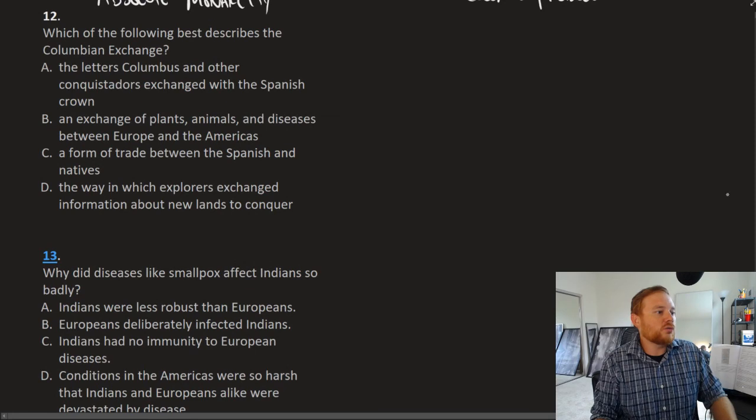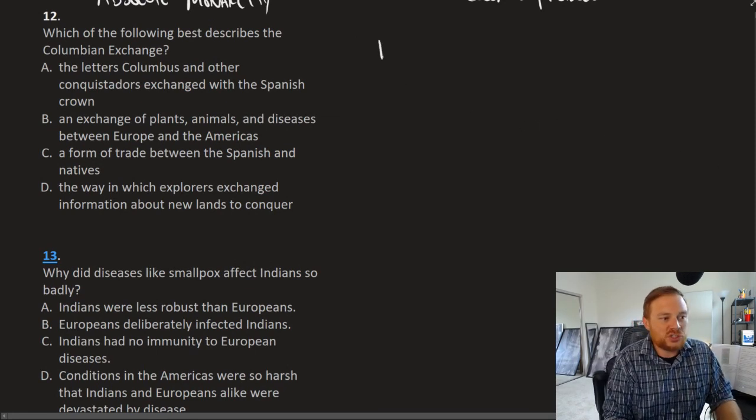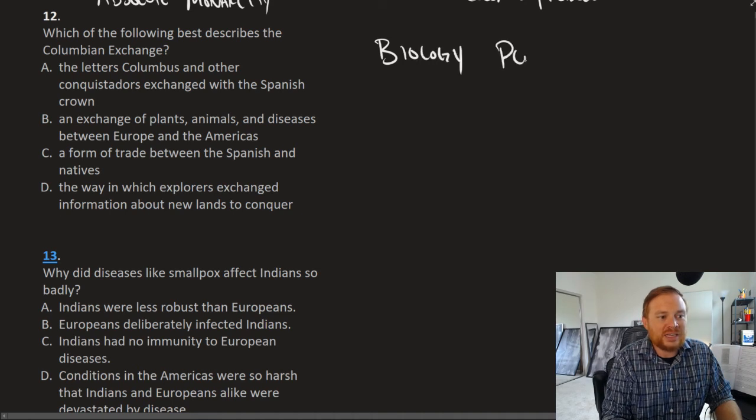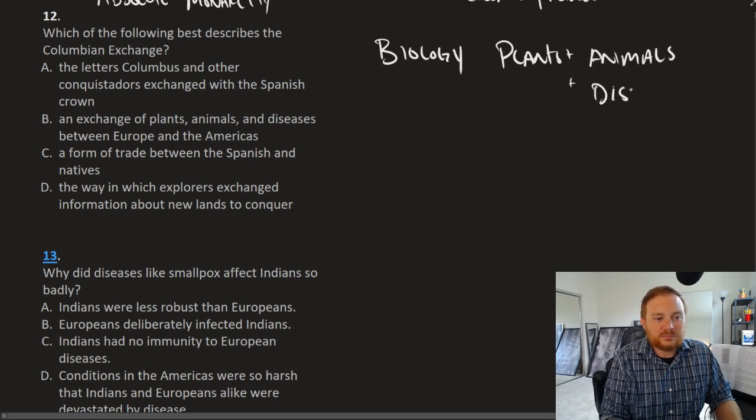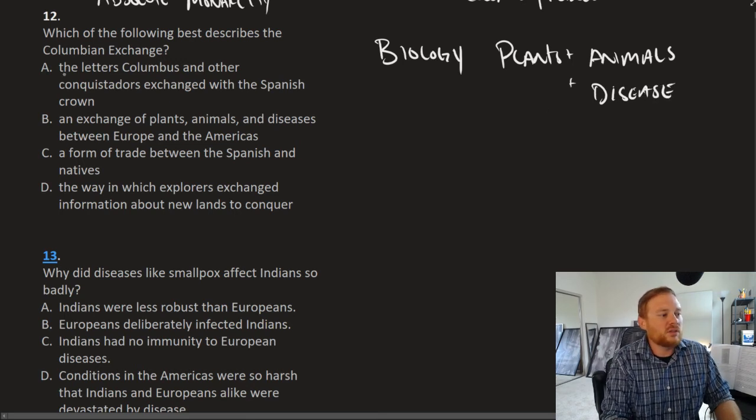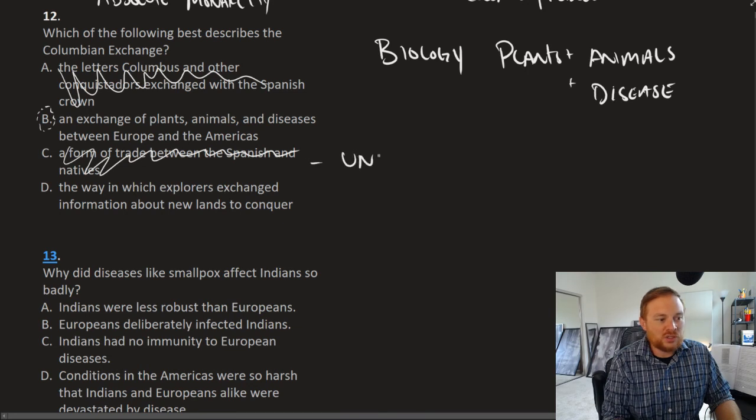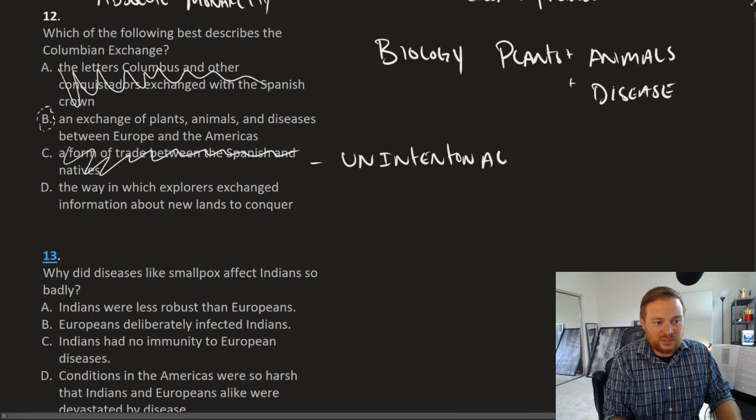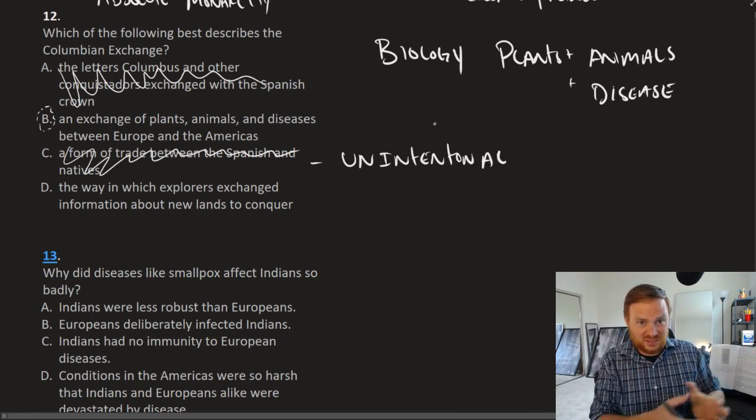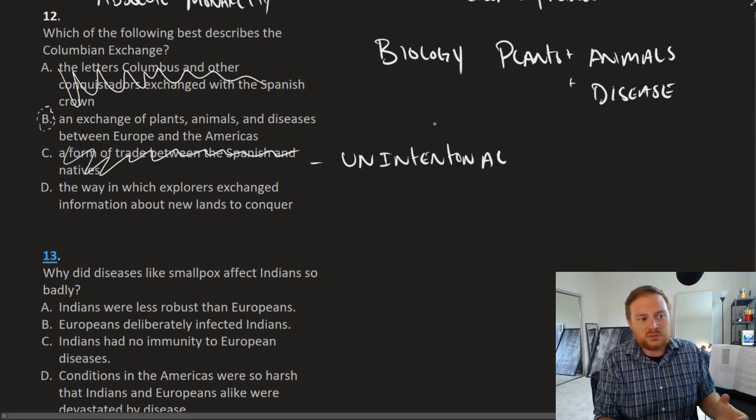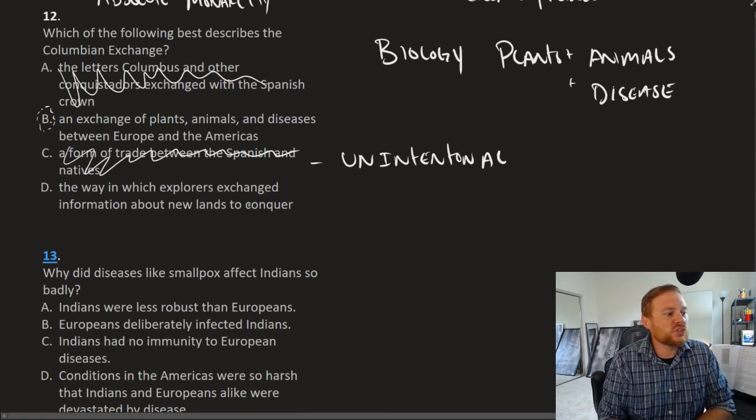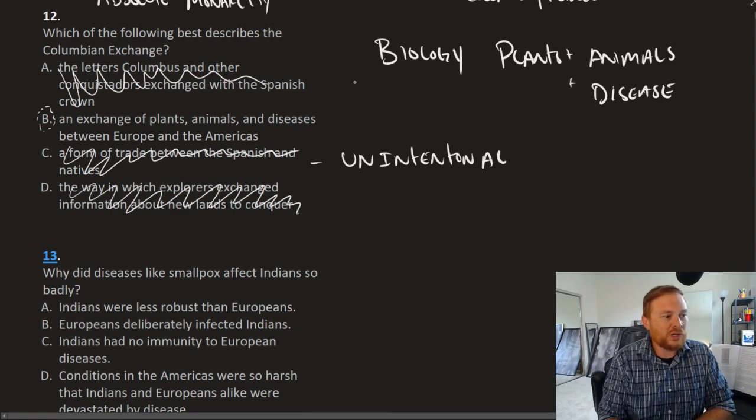Question number 12, which of the following best describes the Columbian Exchange? The Columbian Exchange is biology, plants and animals and disease, is a big part of it. The letters Columbus and other conquistadors exchange? Nope. An exchange of plants and animals and diseases? That sounds pretty good so far. A form of trade between the Spanish and natives? Nope. Because we have to remember that much of the Columbian Exchange was unintentional, that spreading these diseases, bringing over animals and plants and unleashing them on the environment and having them just devastate the environment, wasn't really intended. The way in which explorers exchanged information, no, has nothing to do with that. Biology, plants and animals, B.